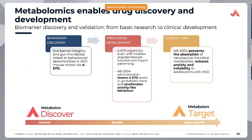They found that 4-EPS influences oligodendrocyte maturation and function. Remarkably, pharmacological treatment with Clemastine fumarate — a drug that promotes oligodendrocyte differentiation — prevented 4-EPS-induced anxiety-like behaviors. In a more recent study, they tested AB2004, which has affinity for small aromatic and phenolic molecules — the typical structure of neuroactive microbial metabolites. In mice, AB2004 lowered circulating 4-EPS and other aromatic molecules, and treated mice did not exhibit any anxiety-like behaviors, providing the rationale for taking this therapeutic approach to the clinic.